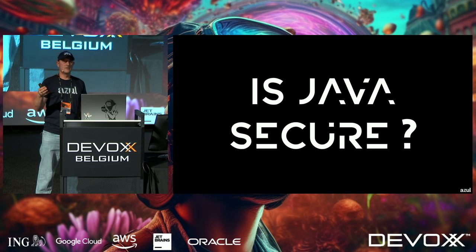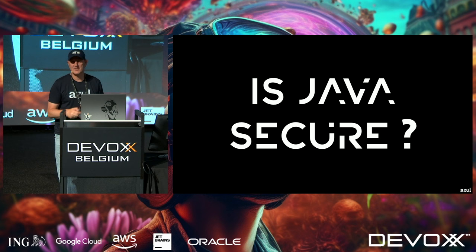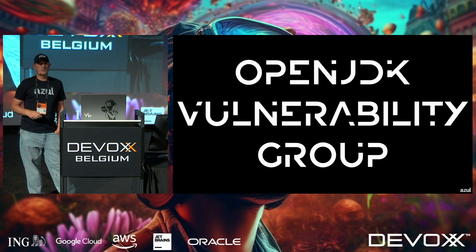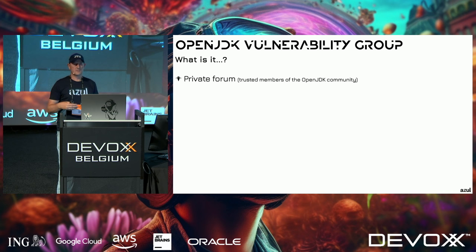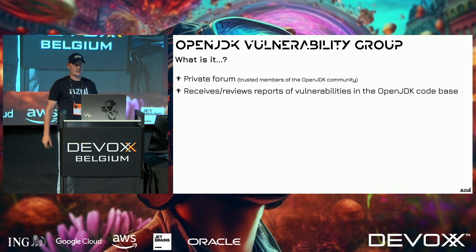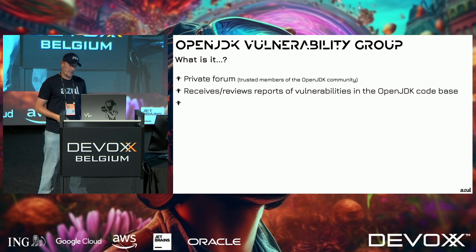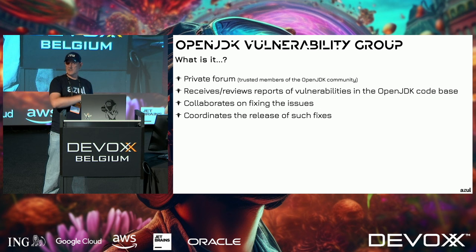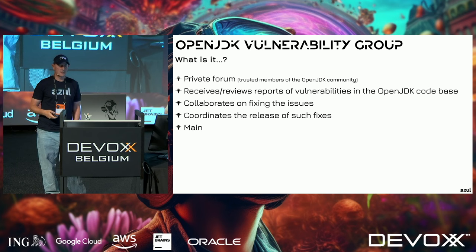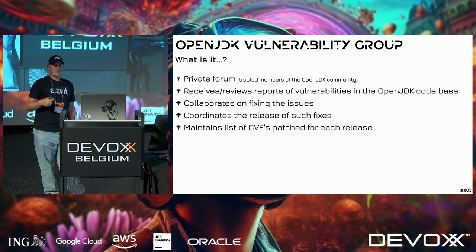So is Java secure? There's the OpenJDK Vulnerability Group — a private forum of trusted OpenJDK community members. You don't just say you're a security expert and join; they choose who they pick. They receive and review reports of vulnerabilities, coordinate fixes (without fixing things themselves), and collaborate on resolving issues.